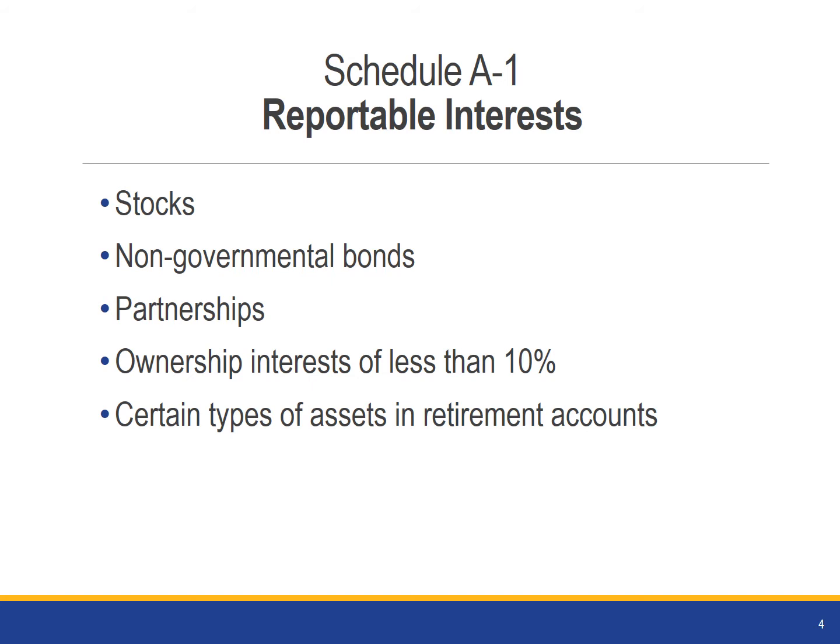If you don't know what types of assets your investment account holds, you should contact your investment company to request a list of assets that make up your portfolio. If the assets are reportable per your Conflict of Interest Code, you must disclose them on your Form 700.